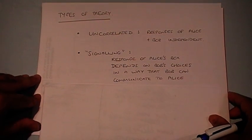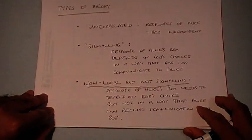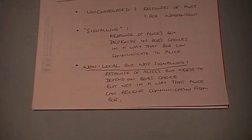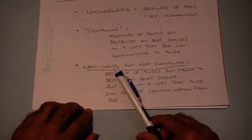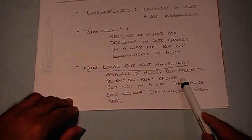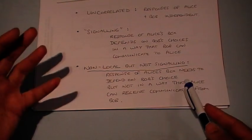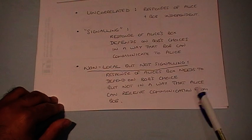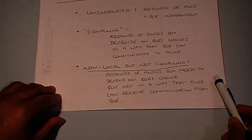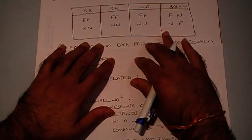In quantum theory, there's another type of classification that's very important: the so-called non-local but non-signalling theories. These are theories in which the response of Alice's box depends upon Bob's choice of experiment, but not in a way that allows Alice to receive communication from Bob. That might seem a little surprising, so let's look at an example.